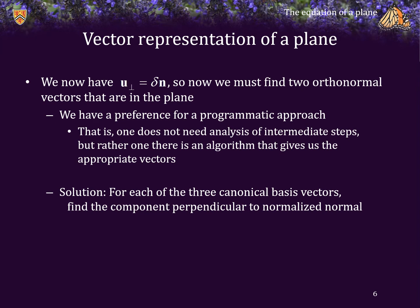Solution. Well, we know that in R3, or 3 space, there are three canonical basis vectors, i, j, and k is what we generally call them. What we are going to do is, we are going to find the component perpendicular to a normalized normal vector for each of these three.